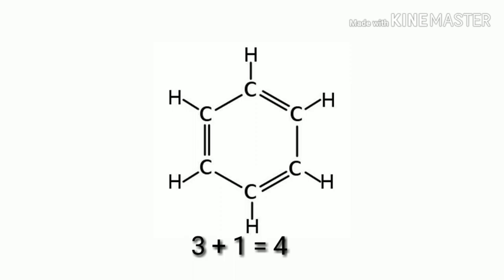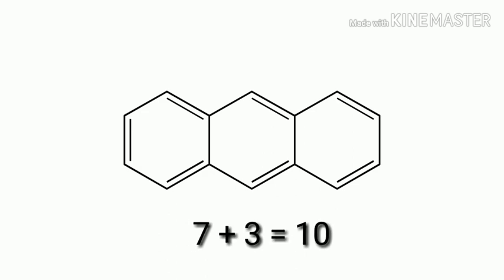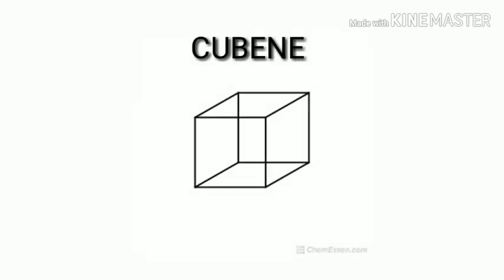For anthracene, there are 6 double bonds and 3 individual rings (rings that are counted individually, not shared). So 7 plus 3 equals 10 degrees of unsaturation total.